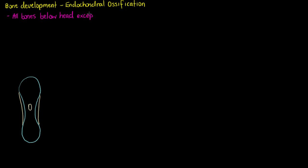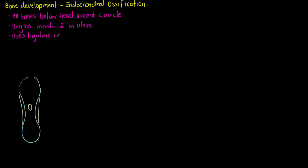With intramembranous ossification, it was the primary method within the first two months of fetal development, but after that time we see endochondral ossification become the primary bone formation method. The key point is that by this stage the majority of the skeletal framework is hyaline cartilage, which will be the blueprint that endochondral ossification will use.